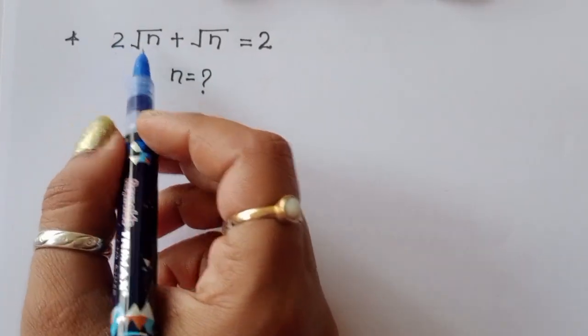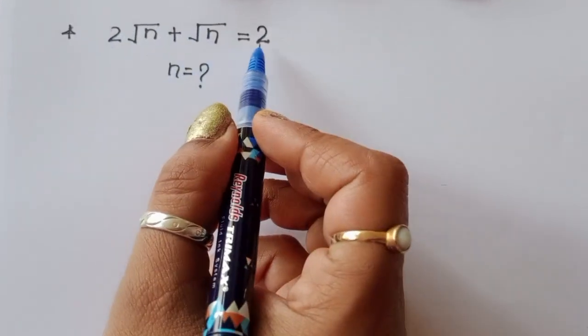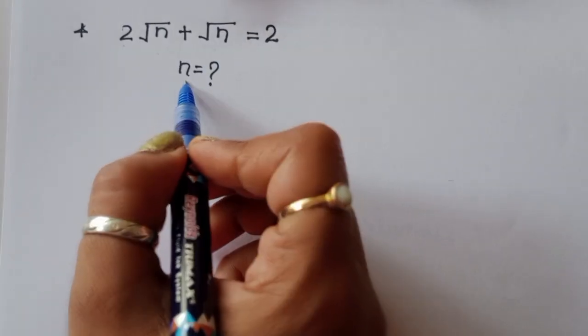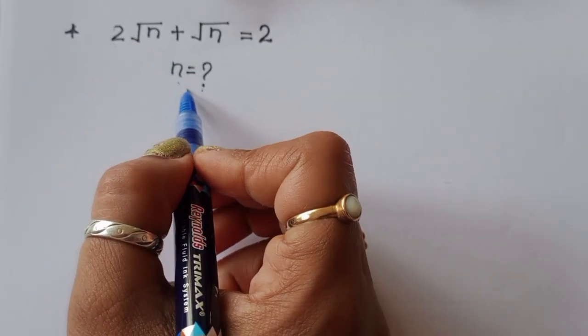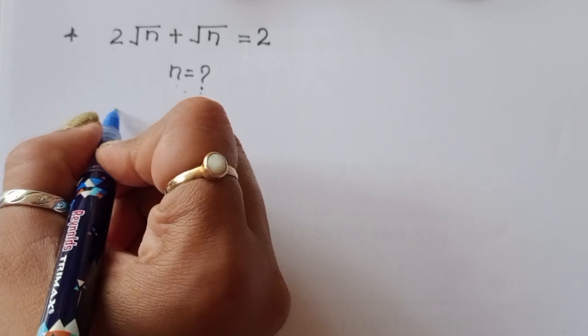The question is: 2 square root of n plus square root of n is equal to 2. We have to find out the value of n. Let's see the solution.